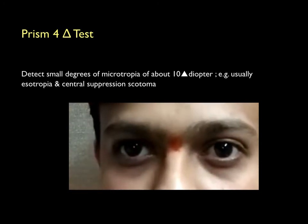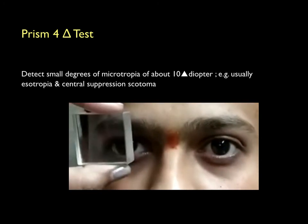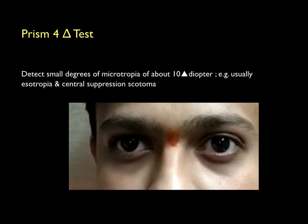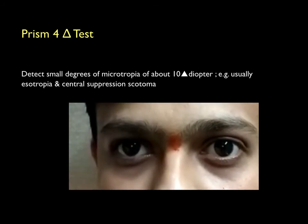Microtropia can be diagnosed based on a four prism diopter base-out test. When the prism is placed in front of the fixating normal eye, you can see an adduction movement in the eye under the prism and a corresponding abduction in the fellow eye, with an immediate re-fixation adduction if there is no microtropia. In microtropia, the re-fixation movement is absent when the prism is placed over the normal eye, and no movement occurs when the prism is placed over the microtropic eye.